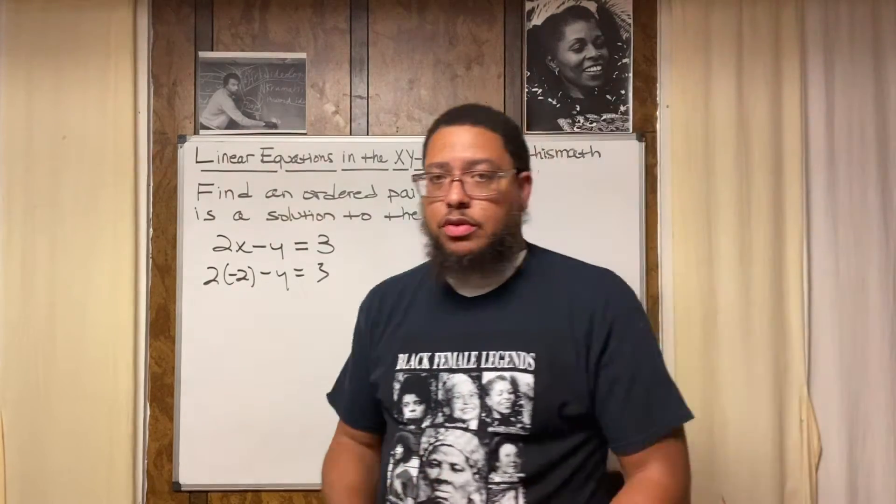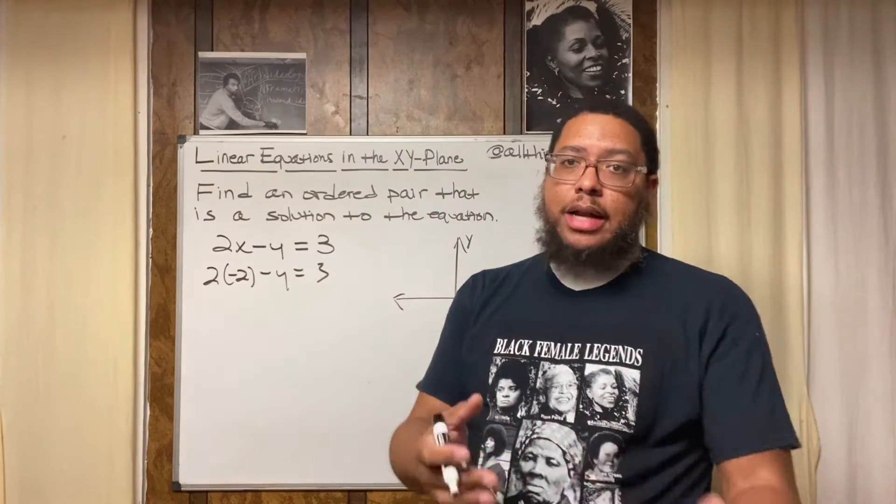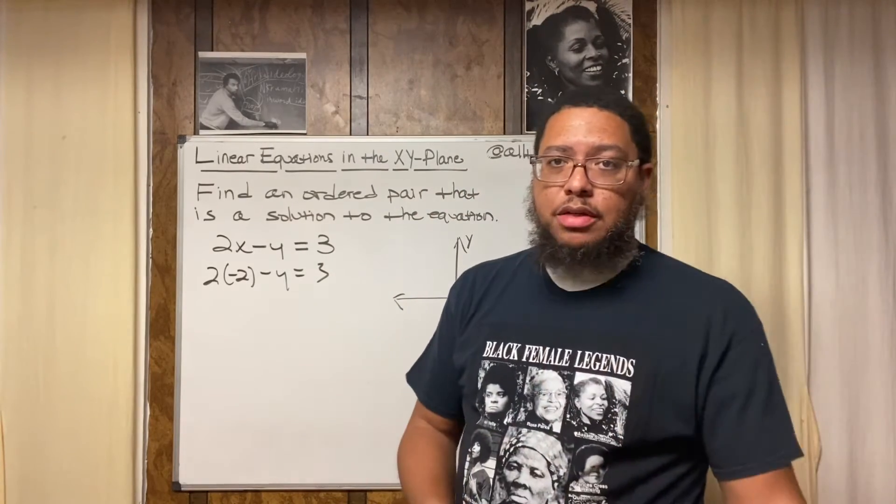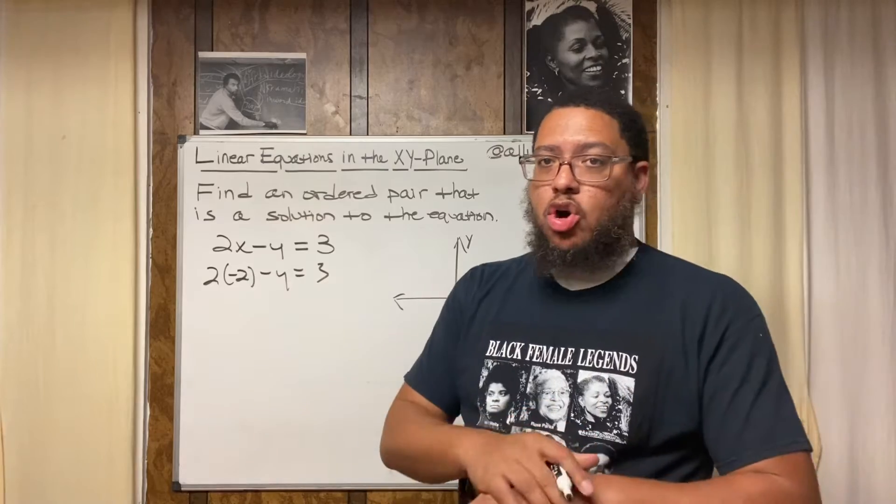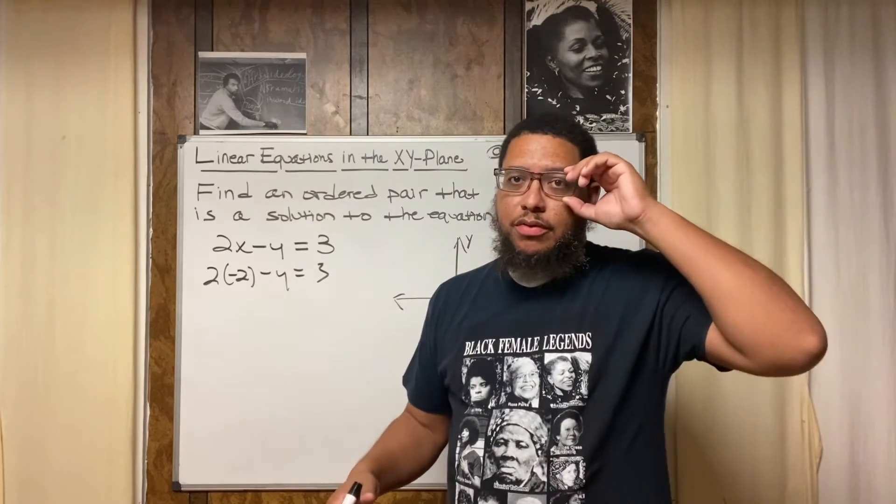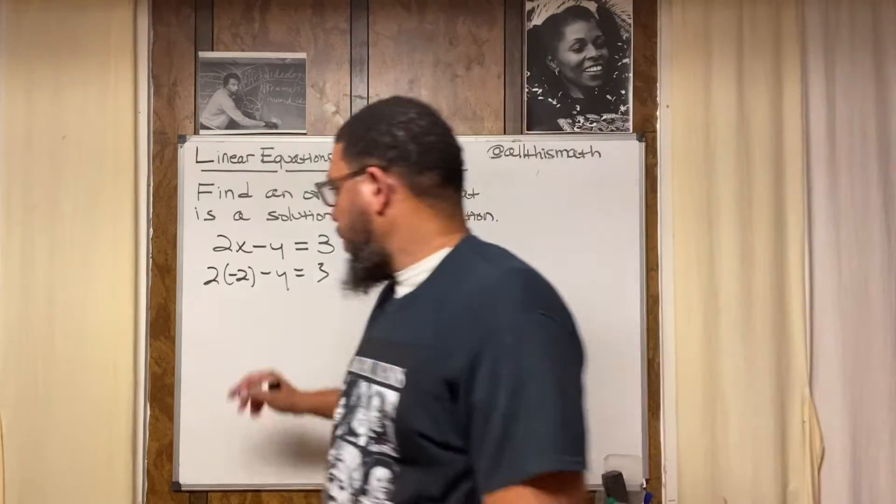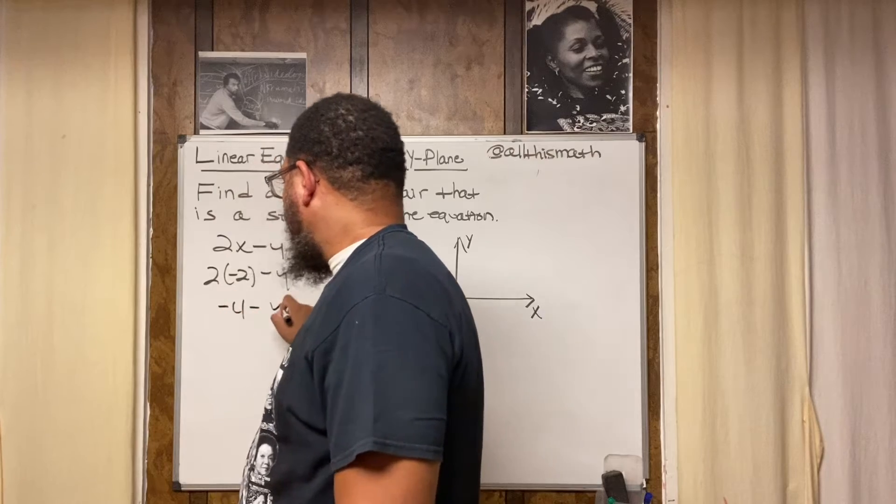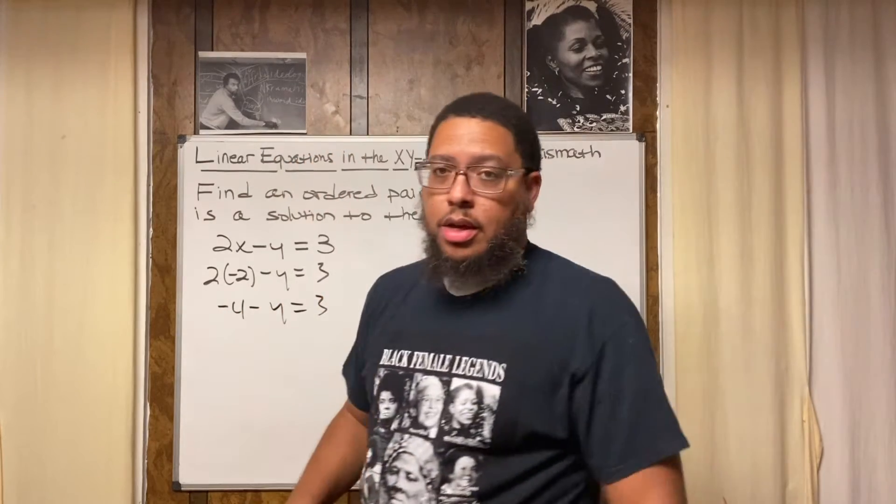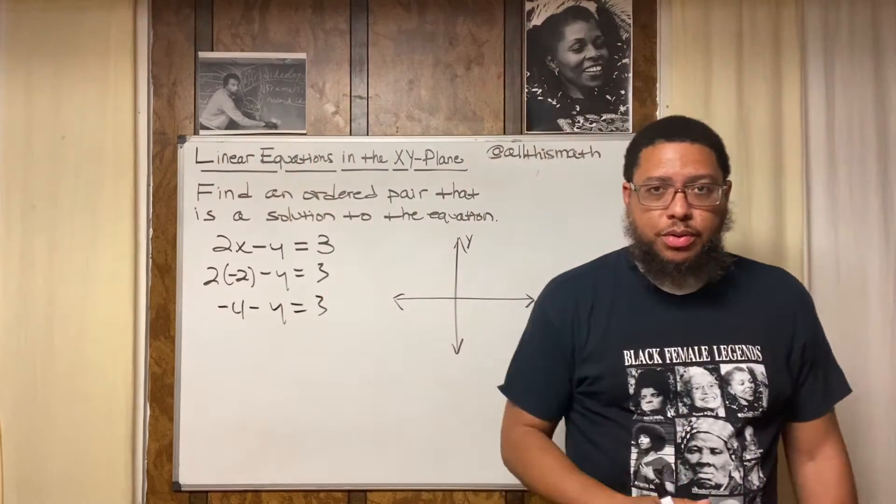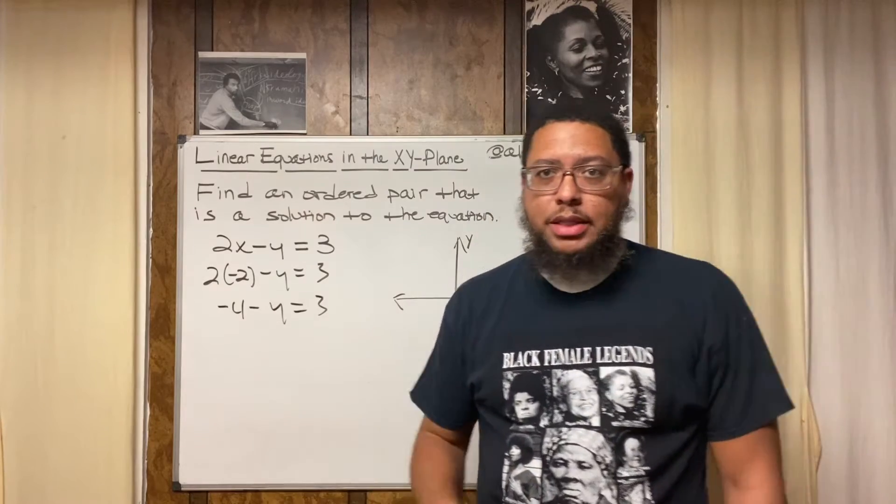In order to solve for y, the first thing I'm gonna do is multiply 2 times negative 2. I gotta know that when you multiply a positive number by a negative number, the product is always negative. So 2 times negative 2 is equal to negative 4. So now I got negative 4 minus y is equal to 3.